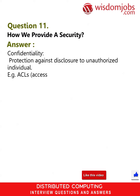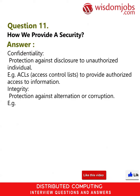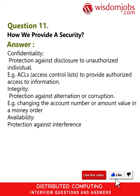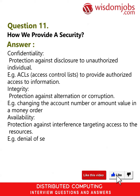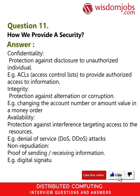Question 11: How do we provide security? Answer: Confidentiality — protection against disclosure to unauthorized individuals, for example ACLs (access control lists) to provide authorized access to information. Integrity — protection against alteration or corruption, for example changing the account number or amount value in a money order. Availability — protection against interference targeting access to resources, for example denial of service (DoS/DDoS) attacks. Non-repudiation — proof of sending and receiving information, for example digital signature.